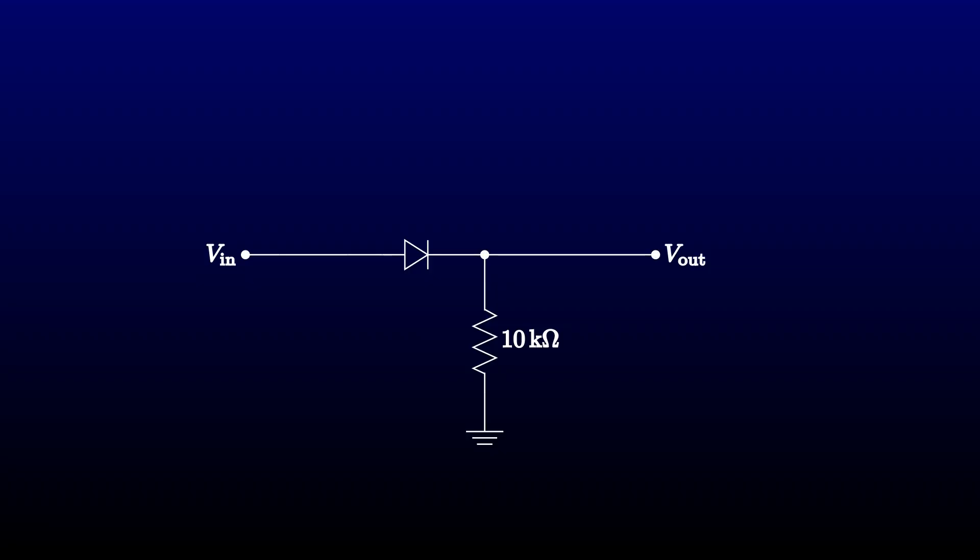Of course, we don't live in an ideal world. The first issue we will have to contend with is that the diode has a forward voltage drop, so our positive output will always be too low by that amount.